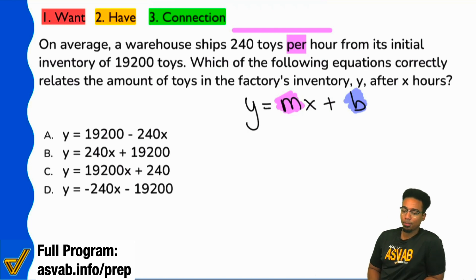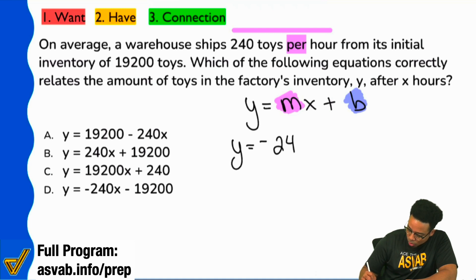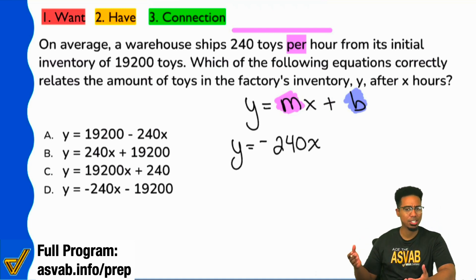And so there you go, boom, we're good. We have y equals negative 240x, and that beginning amount, it's a positive amount. You know, 19,200 toys, you can't say you have a negative number of toys.